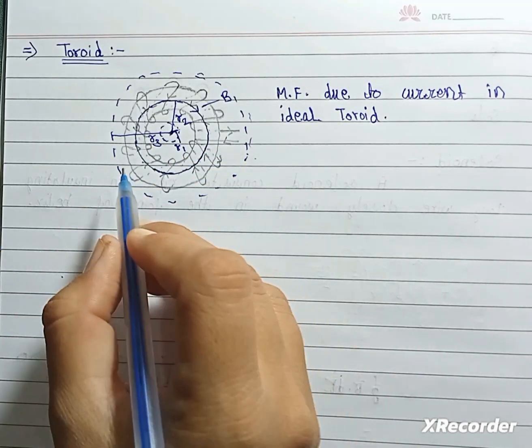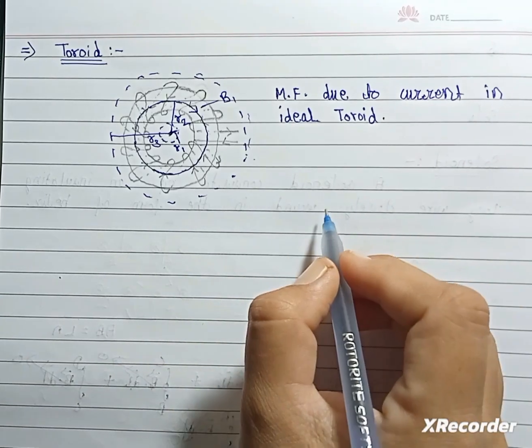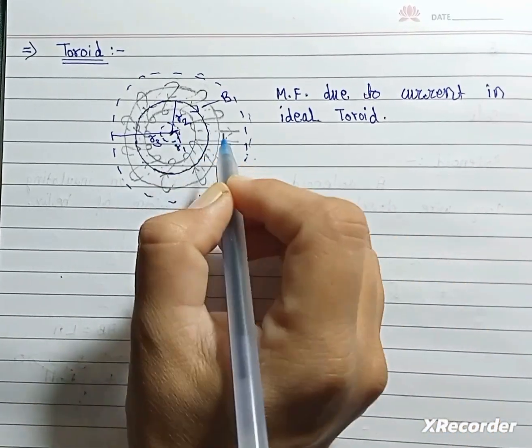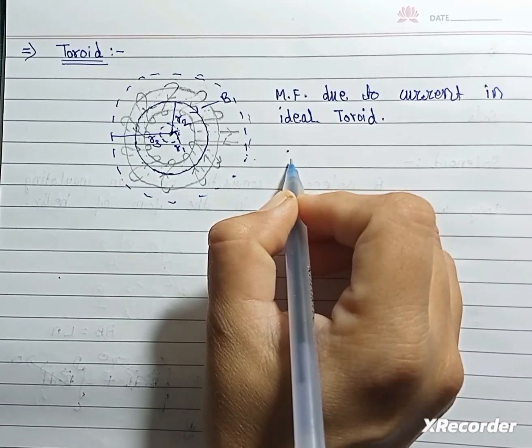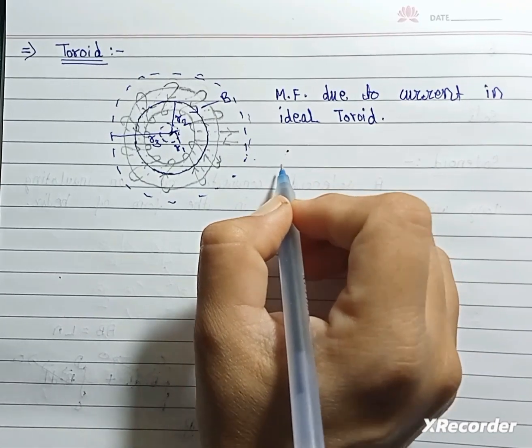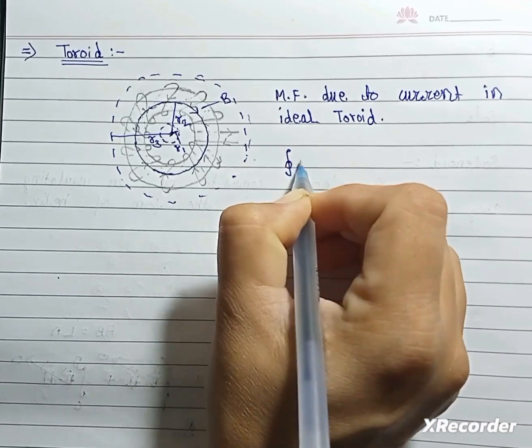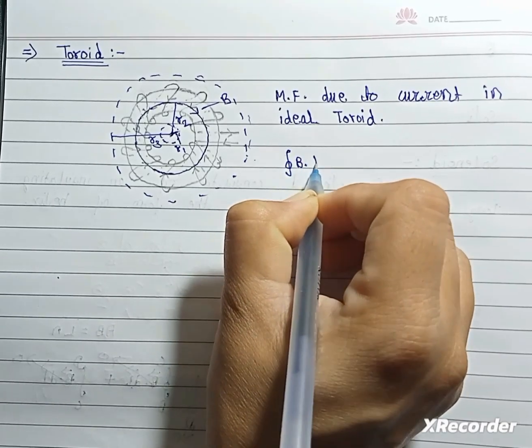Now calculate magnetic field for loop first, this loop. We know according to Ampere's circuital law, closed integral of B dot dL...